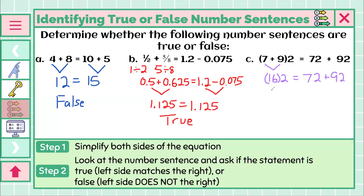And that is supposed to equal 72 plus 92. If we keep going, we can say, well, what is 16 times 2? That would be 32. And we ask ourselves, does 32 equal 72 plus 92? I can already tell it probably doesn't, but I will finish it. 72 plus 92 is 164. Well yes, 32 does definitely not match 164. So the third one is a false number sentence.